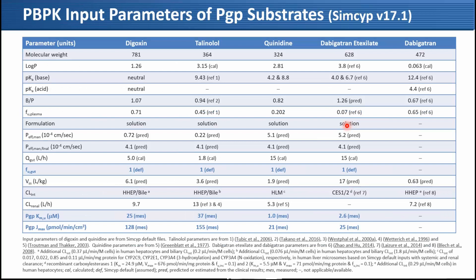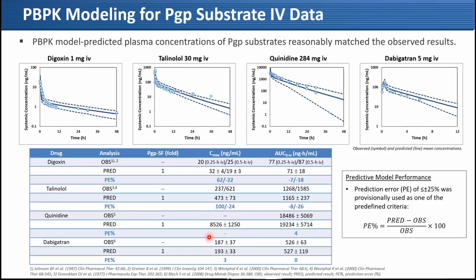We have PBPK models for digoxin, talinolol, quinidine, and dabigatran etexilate. We also needed active molecule dabigatran PBPK models. We used FuGut equal to 1 for all P-gp substrates, and entered in vitro P-gp KM and Jmax into these PBPK models. These are the PBPK model IV data profiles for the P-gp substrates — digoxin, talinolol, quinidine, and dabigatran — and we reasonably predicted the IV profiles.